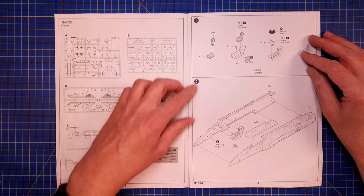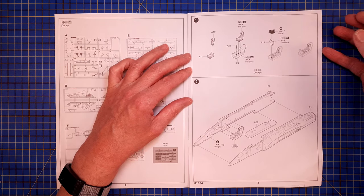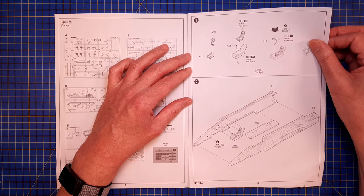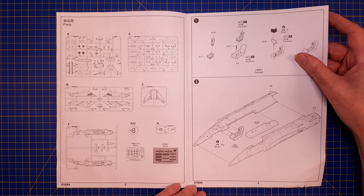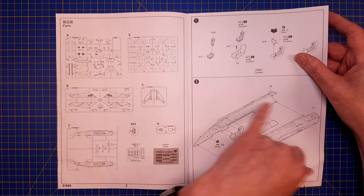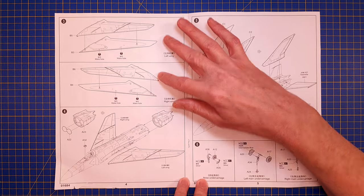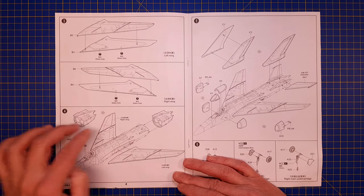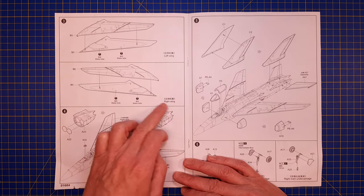Step number one is, of course, assembly of the cockpit. Then we move on to the internal bay, assembly of the fuselage halves, assembly of the wings, and the engine sub-assembly, the tail piece.